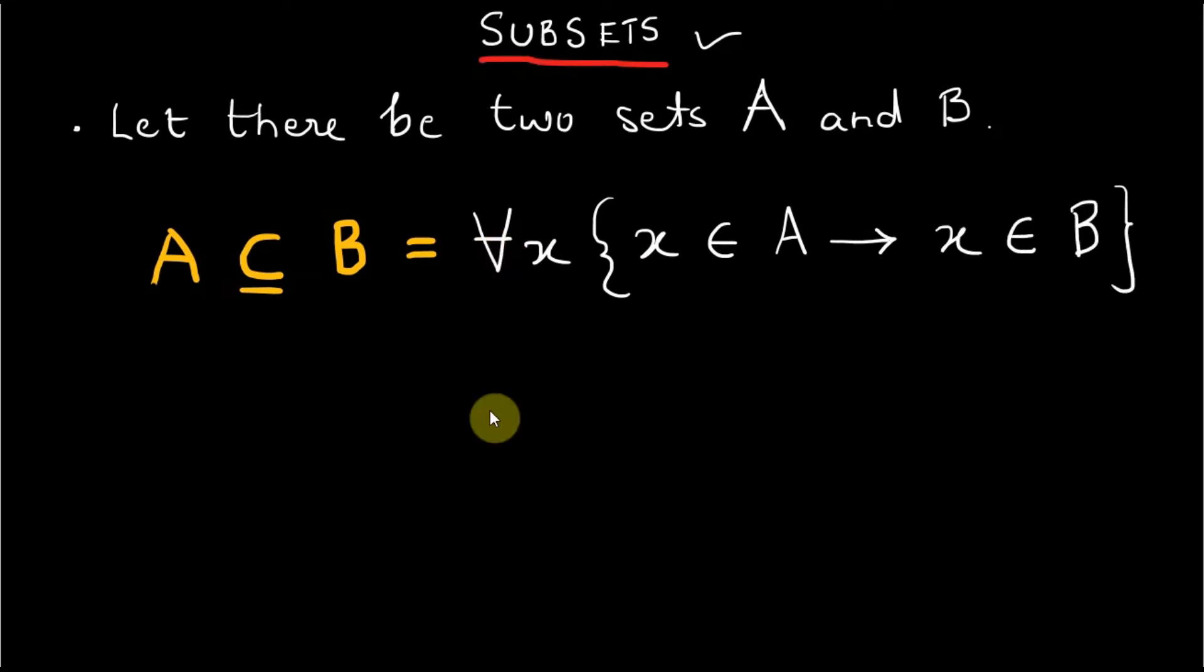For sets that are not subsets, it is denoted as A is not a subset of B equals for all x, x in A implies that x not in B.